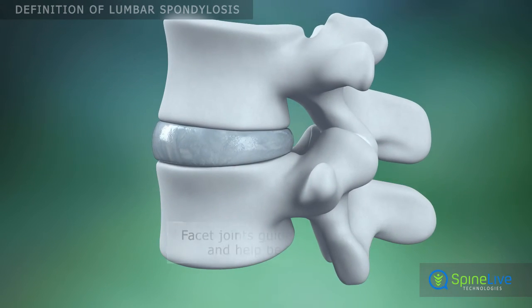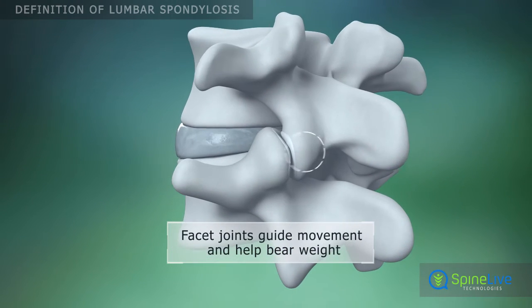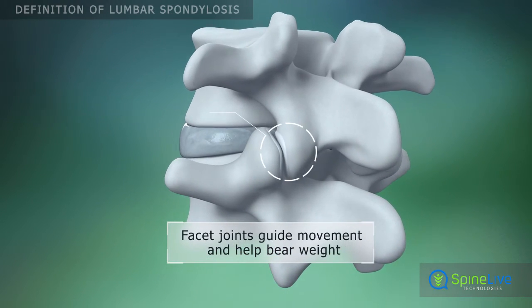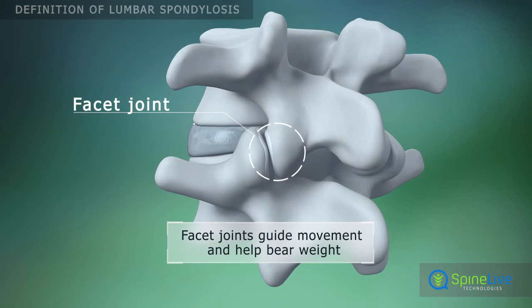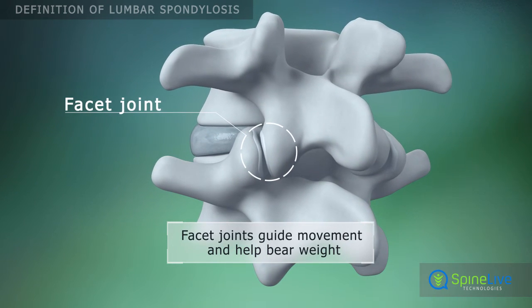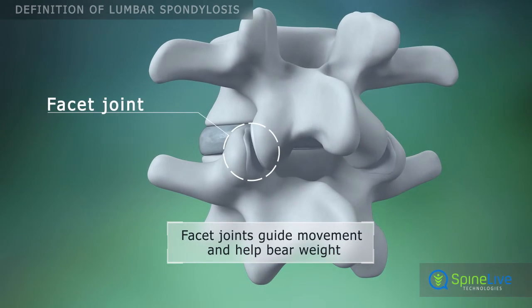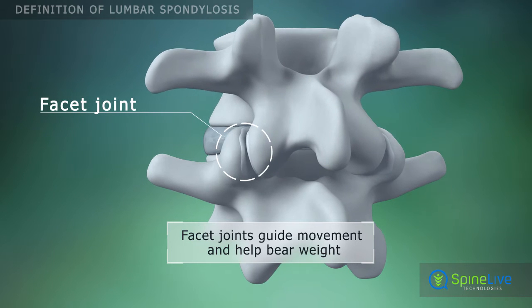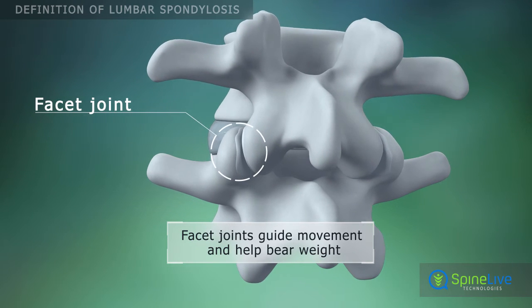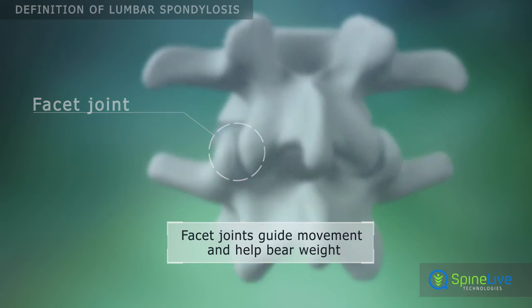Facet joints are located between each pair of vertebrae. They guide and limit the movement of the spine, providing stability and bearing a share of the load on the spine.